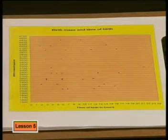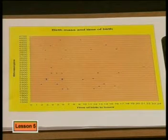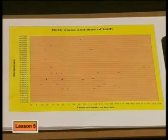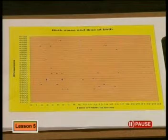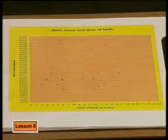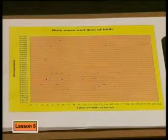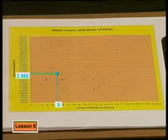Here is one more scatter plot to consider. This scatter plot shows the relationship between the birth masses and time of birth for a group of 44 babies all born during the same 24-hour period in a hospital. Each point on the plot represents the data for one of the 44 babies. Can you see any trend in this data? You can see that it would be difficult to find a place where a line would fit, so we can conclude that there is no correlation between birth mass and time of birth.